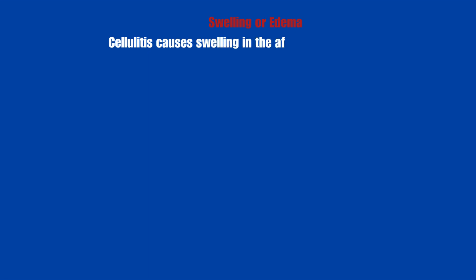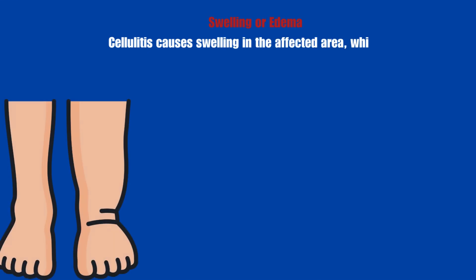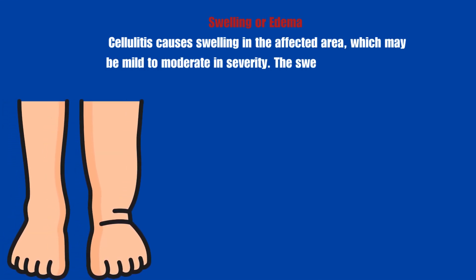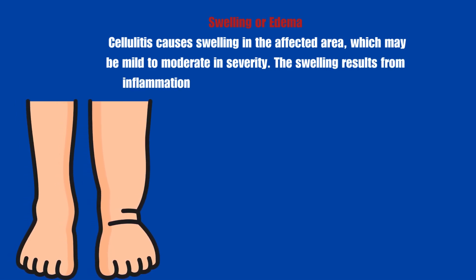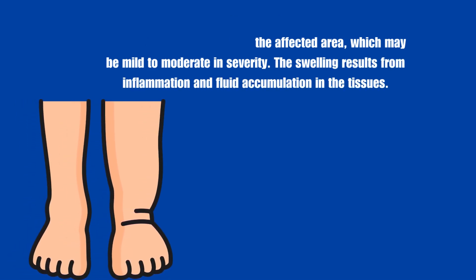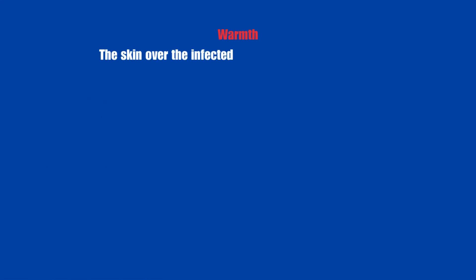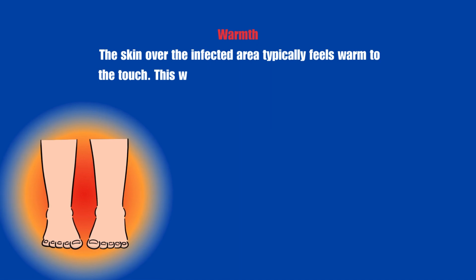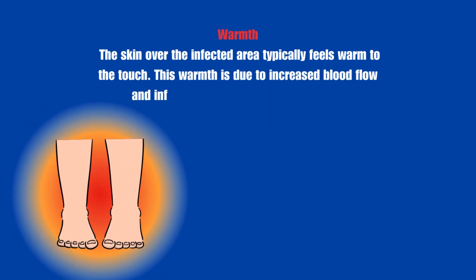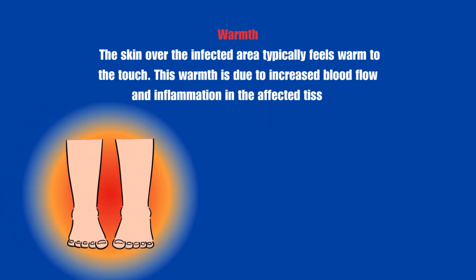Swelling or edema: Cellulitis causes swelling in the affected area, which may be mild to moderate in severity. The swelling results from inflammation and fluid accumulation in the tissues. Warmth: The skin over the infected area typically feels warm to the touch. This warmth is due to increased blood flow and inflammation in the affected tissues.